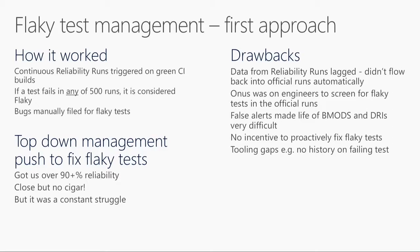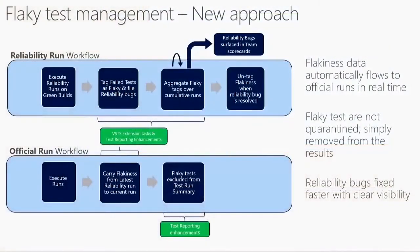The old system had a few flaws. The reliability signal coming out of the reliability run was not used immediately — it was used to file a bug, and then later an engineer would go fix it. There was no natural incentive to fix the system as it goes. So we fixed that in the next iteration: the flakiness signal from the reliability run now immediately flows back into the official run. We take that signal, knowing a test is flaky, and immediately mark the result of that test as flaky in the official run.